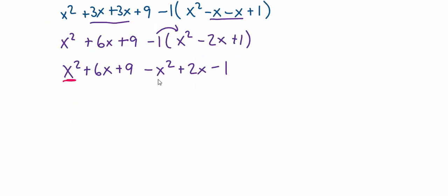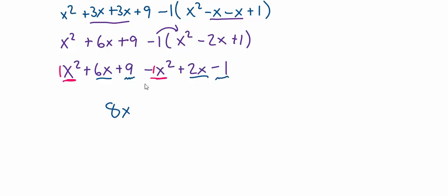I have x squared and subtract x squared, and 1 minus 1 is 0. So x squared minus x squared is 0, and we don't usually write adding 0 in mathematics — adding 0 does not change anything. Then we have 6x and 2x, that gives me 8x. And then finally, we have the constant 9 and the constant minus 1, and 9 minus 1 is positive 8. So I have 8x plus 8.